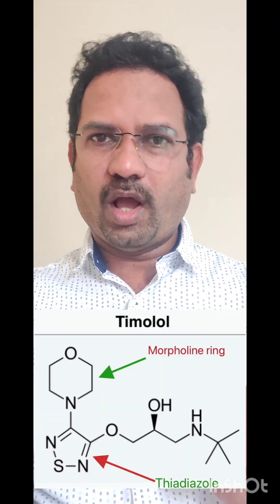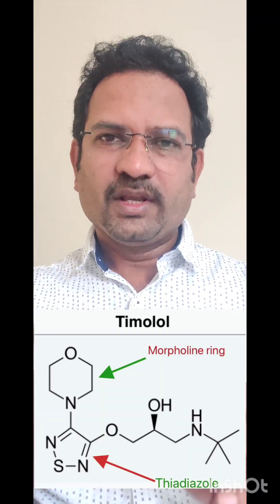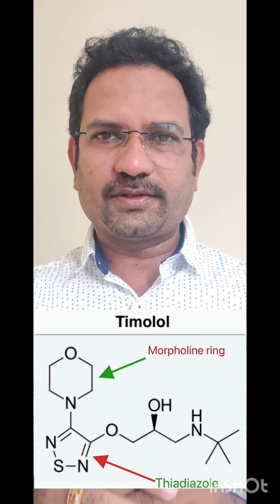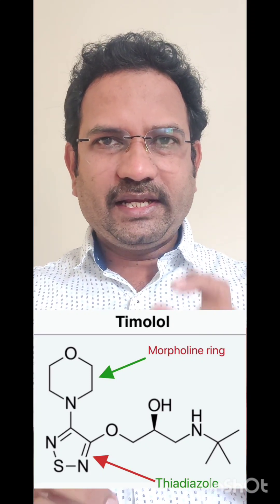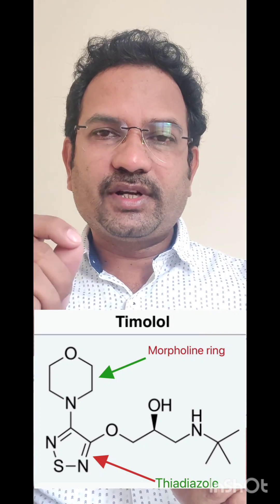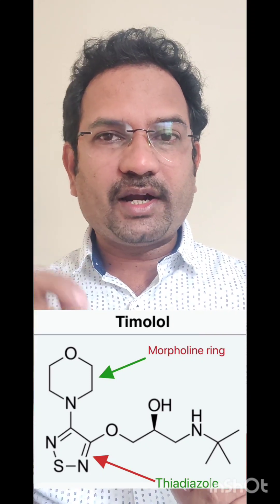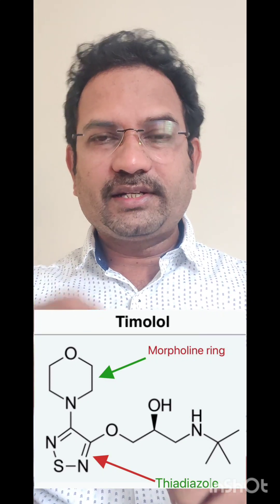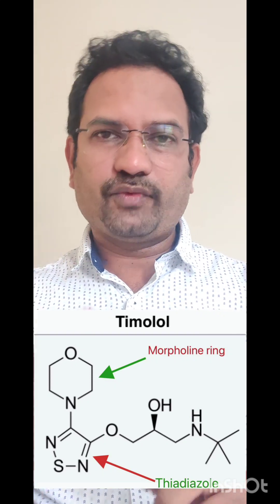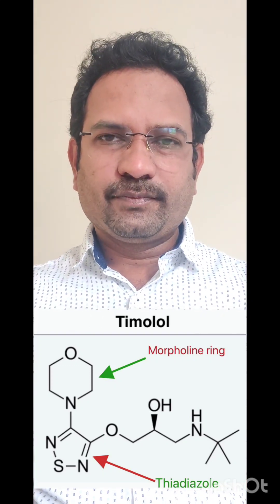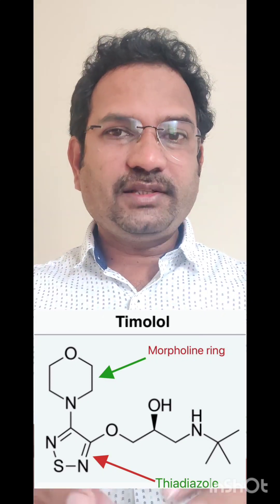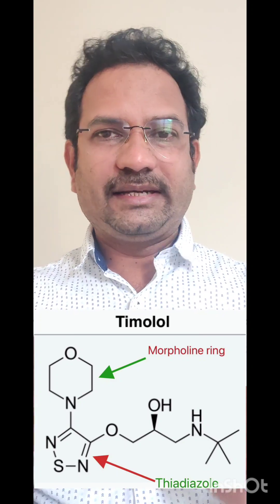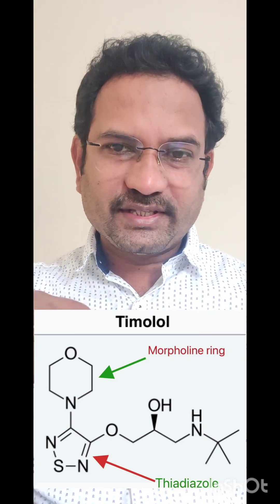Now timolol — the reason why it is called timolol: 'ol' ending is common to all beta blockers. 'T' indicates it has a thiodiazole ring. 'Mo' indicates it has a morpholine ring. So the answer is option A — it contains morpholine and thiodiazole.